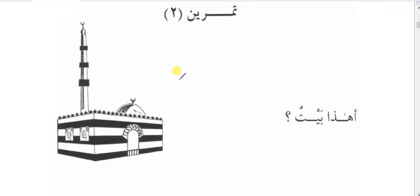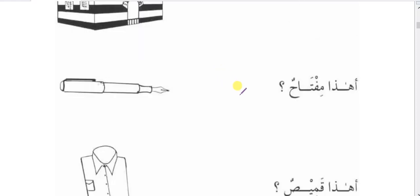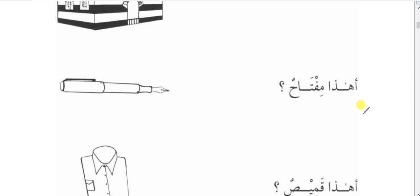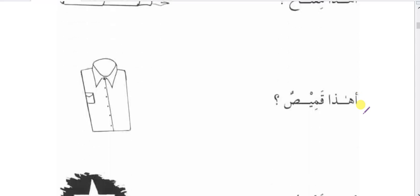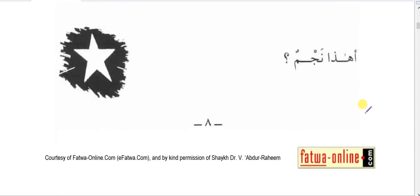Exercise two answers: a haza kameesun — is this a shirt? A haza najmun — is this a star? Naam, yes — haza najmun, this is a star.